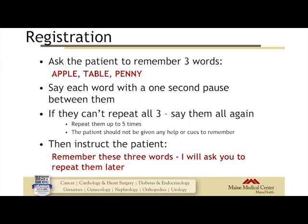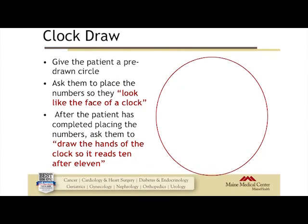Registration involves asking them to remember three words. The three I always use are apple, table, penny — say each with a one-second pause between them. If they can't repeat all three at once, say them again, up to five times. If it takes five times to encode three words, put a little asterisk — that may be a soft sign of a cognitive issue. Then instruct the patient: 'Remember these three words because I'll ask you to repeat them later.'